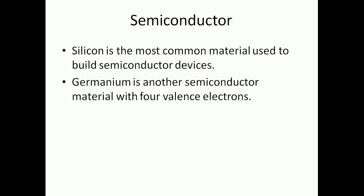Silicon is the most common material used to build semiconductor devices. Germanium is another semiconductor material with four valence electrons. Thank you.